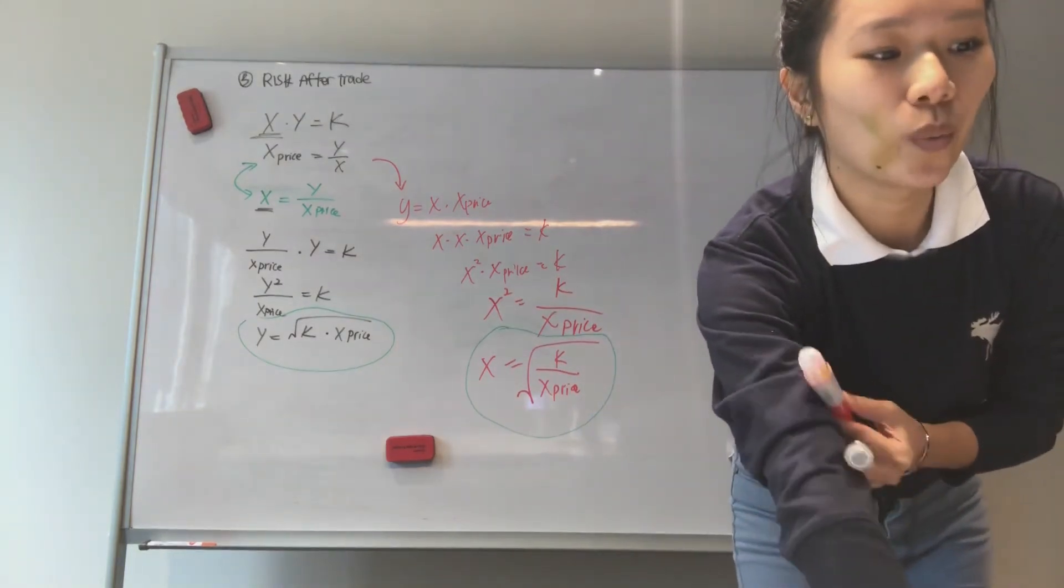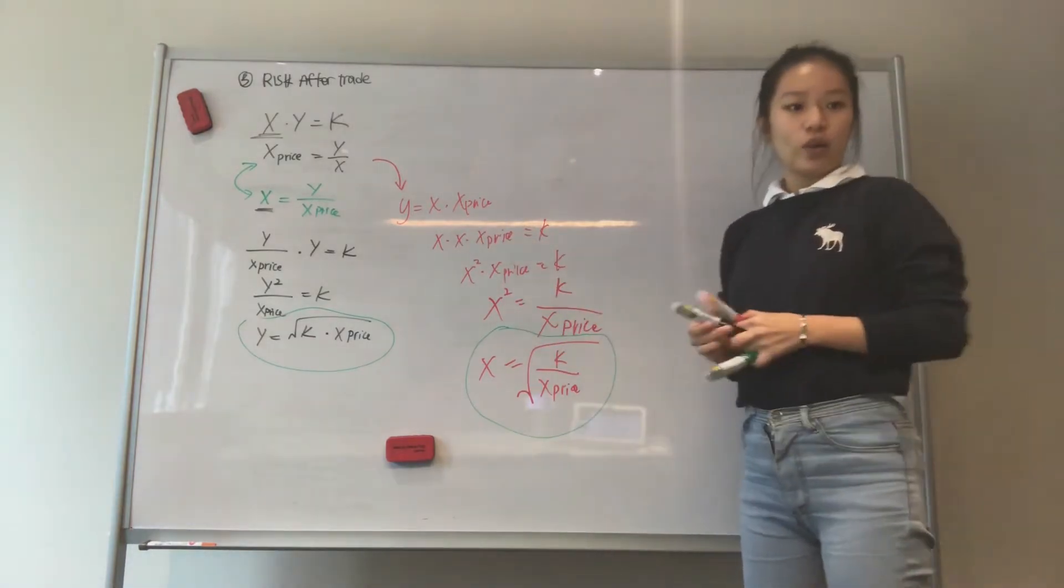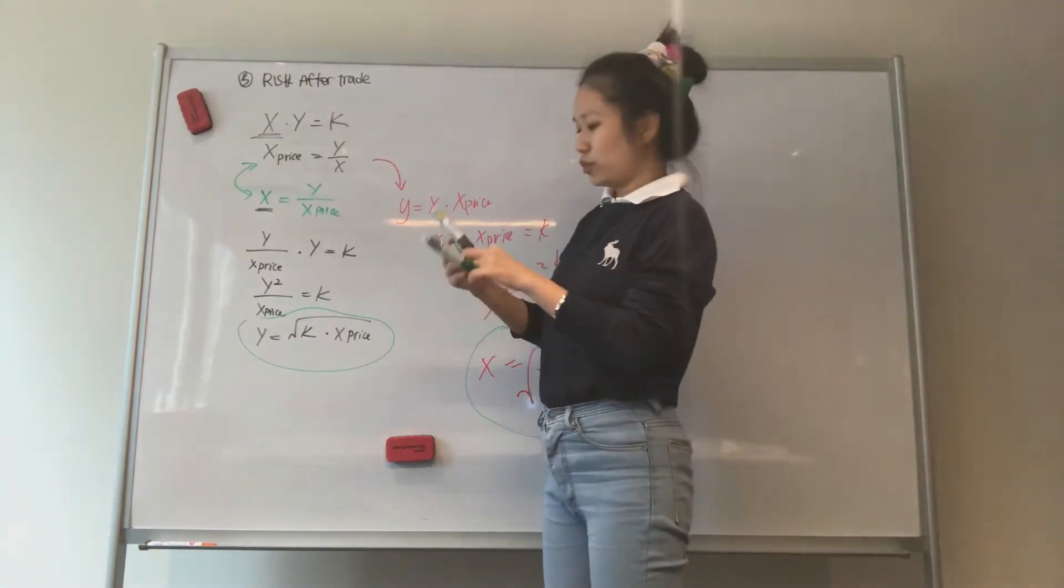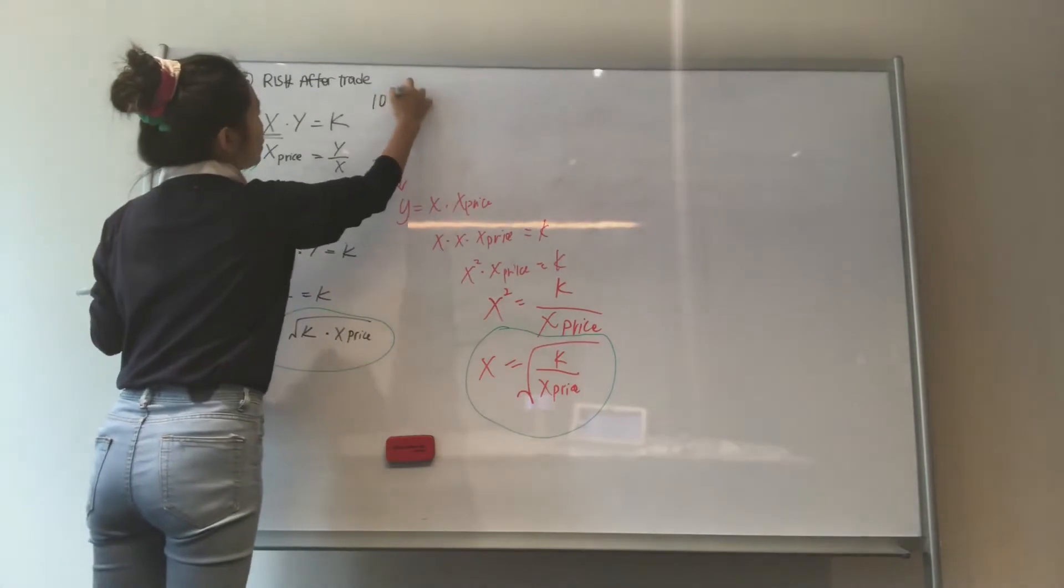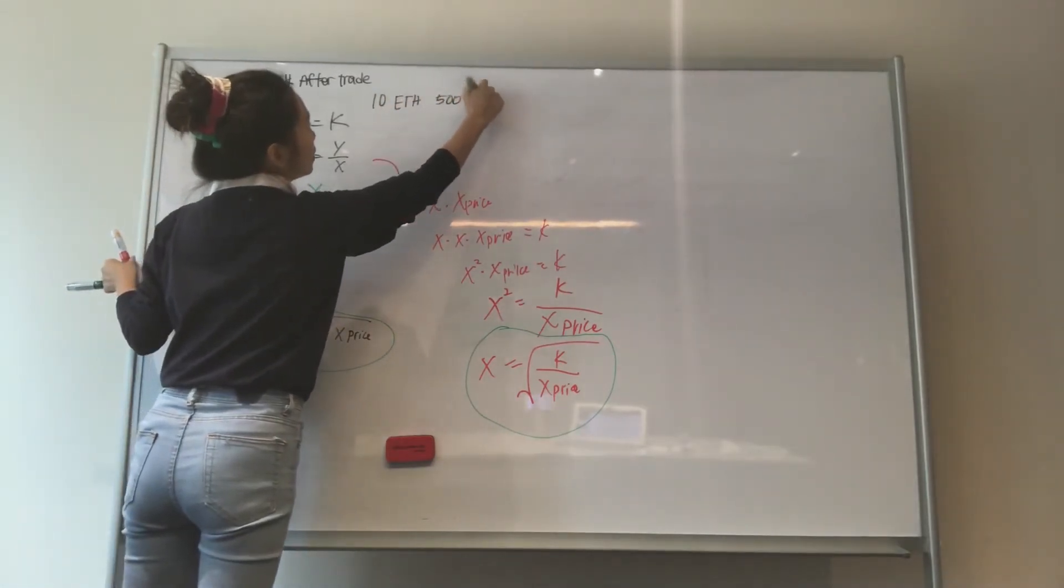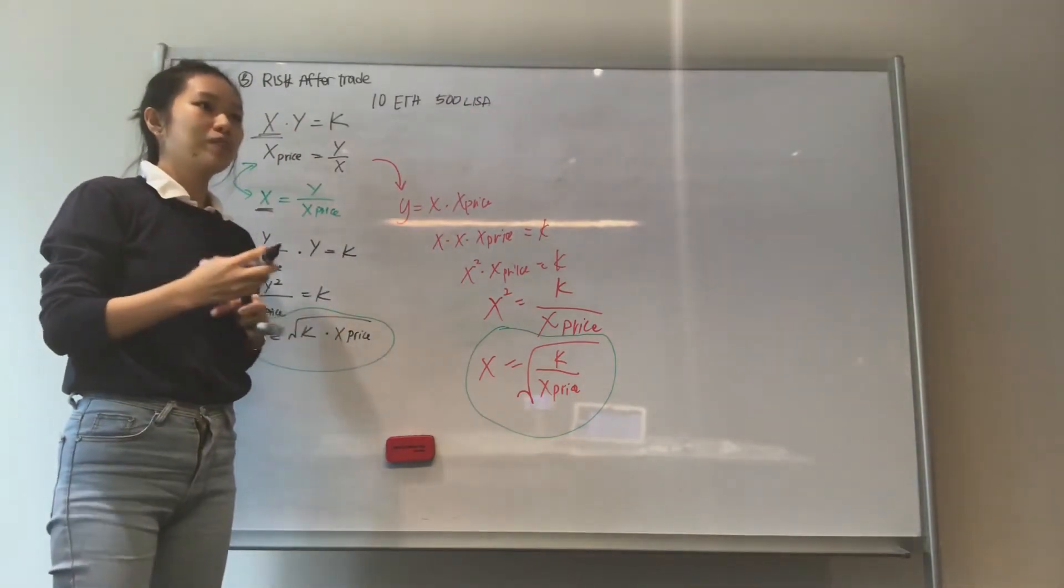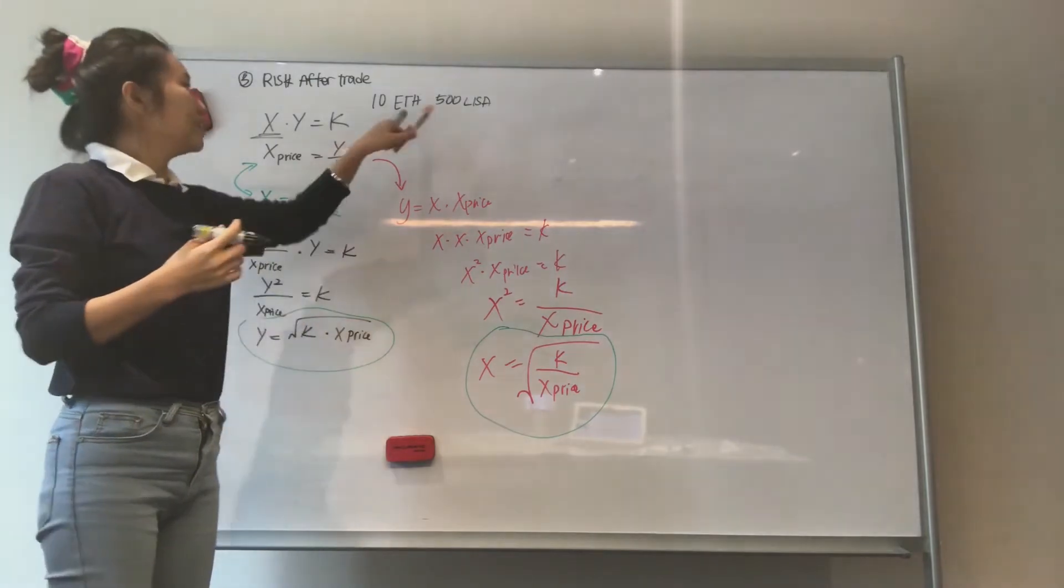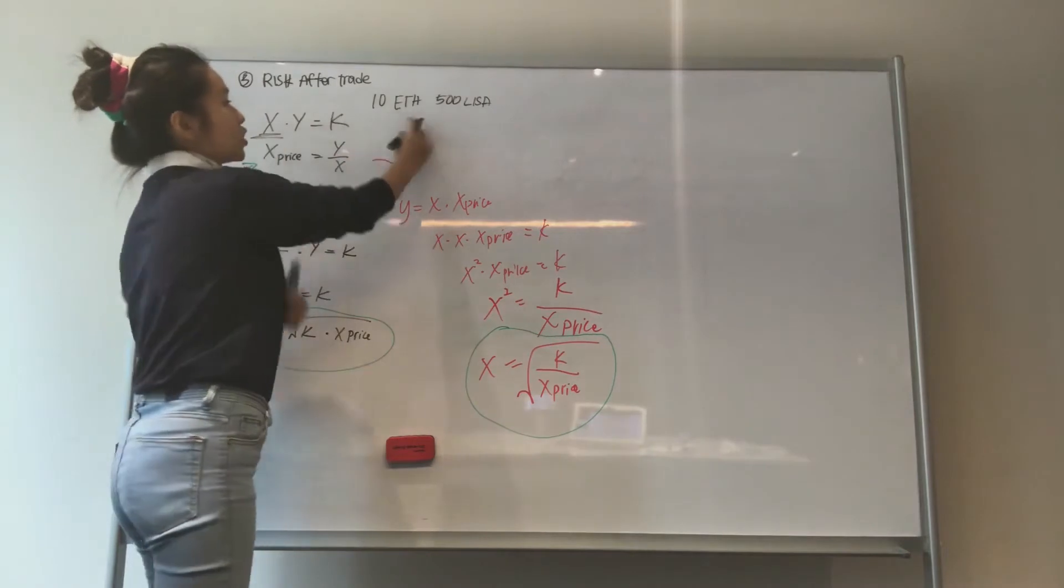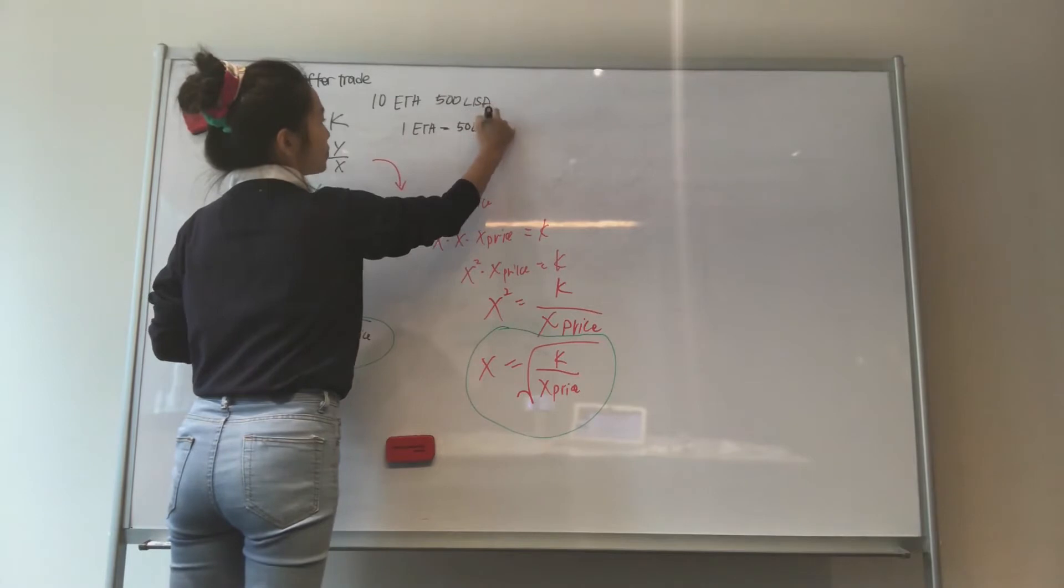Okay, so that's that. Now, what happens? Let's go deeper into exploring this. What happens when the price changes? So we know that this price, we had 10 ETH and 500 LISA. Let's just say this is the exchange rate right now, which is 1 ETH equals 50 LISA.